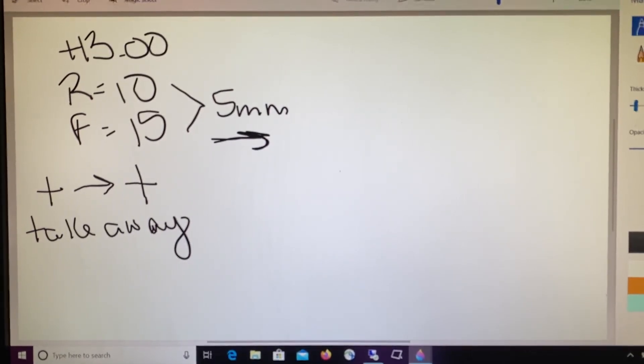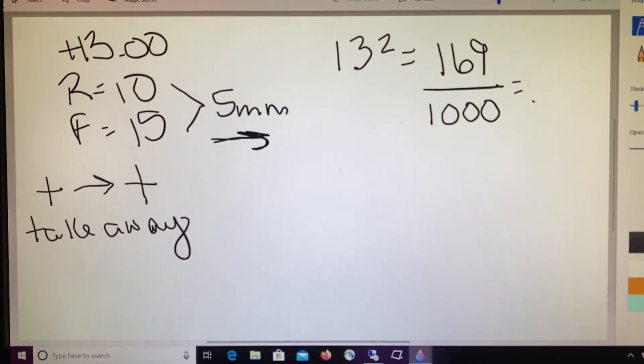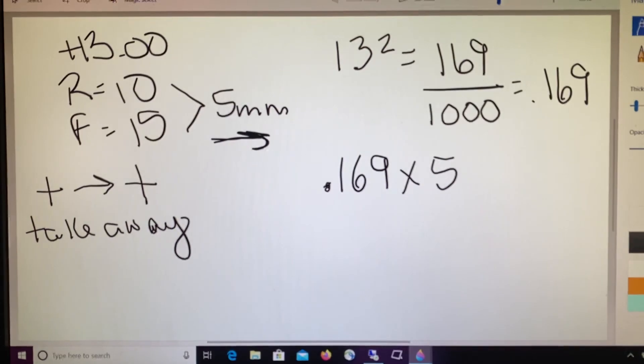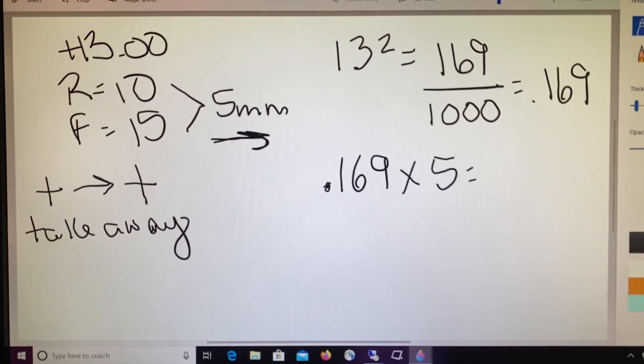We're going to plug our prescription into the equation. 13 squared, or 13 times itself, equals 169. We divide that 169 by a thousand, giving us 0.169. We take that 0.169 and multiply it by the difference, which is 5. When we do 0.169 times 5, we get 0.845.